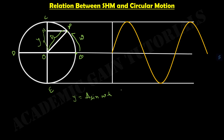We actually saw in our earlier video how we get this A sine omega T value. So this is the equation for our displacement. In the same case, when we find out the velocity, the velocity will be A omega cosine omega T. And for the acceleration, our acceleration will be minus of A omega squared sine omega T.